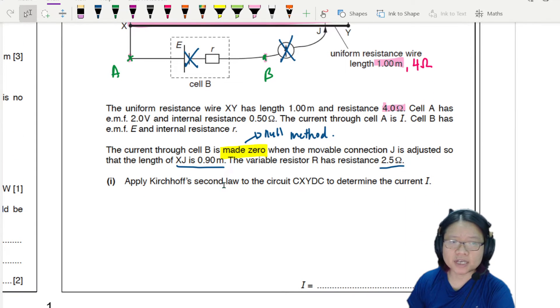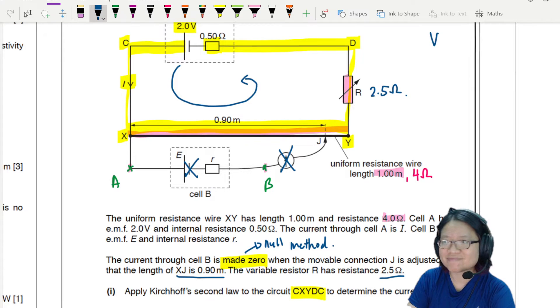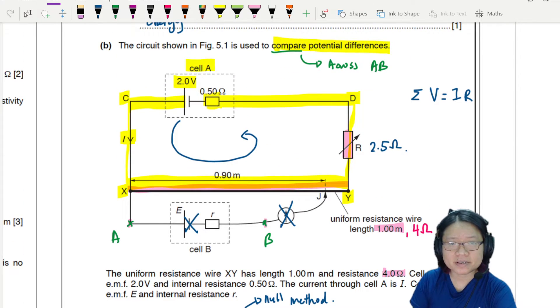Apply Kirchhoff's second law to the circuit CXYDC to determine the current I. So let's see, CXYD back to C. So actually what we're talking about is this loop. This loop is your CXYDC. So if I want to do Kirchhoff's second law, which is actually just a fancy way of saying V equal to IR. But I can say sum of EMF is equal to sum of potential difference, or sum of IR. You can write it however you want.